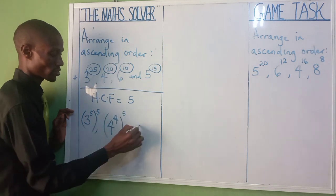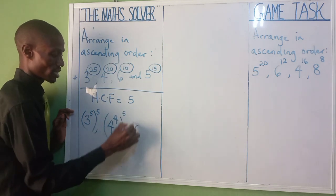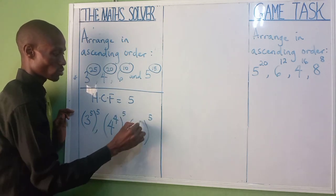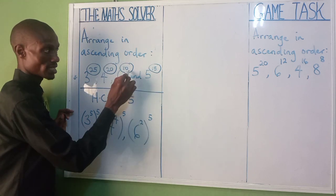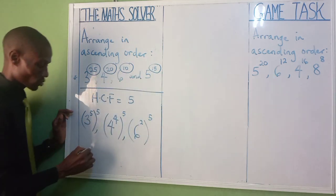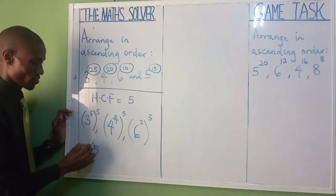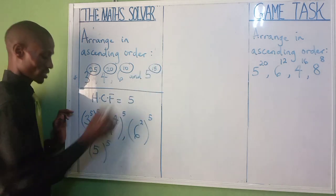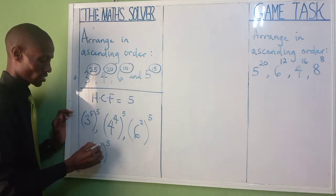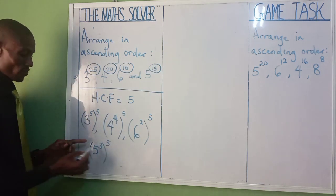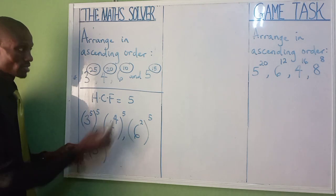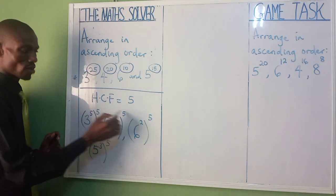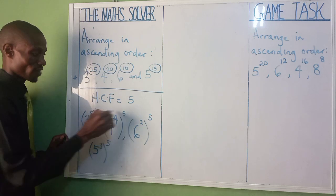For six raised to the power of 10: put your 5 outside and write 2 inside, because two times five is 10. For the last one, five raised to the power of 15: put your 5 outside and write 3 inside, because three times five is 15. So everything is now raised to the power of five.